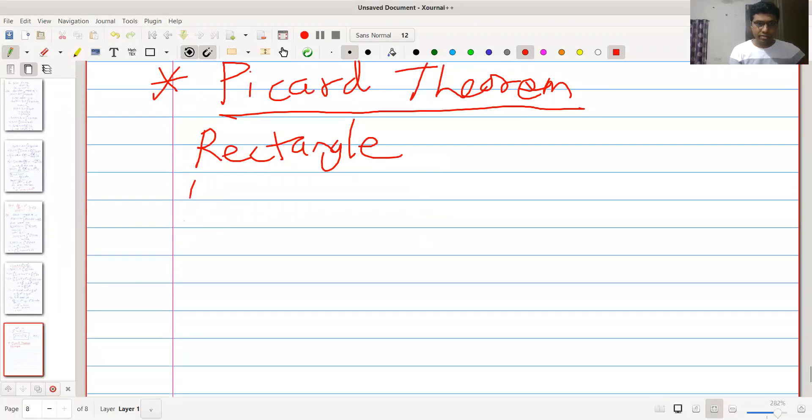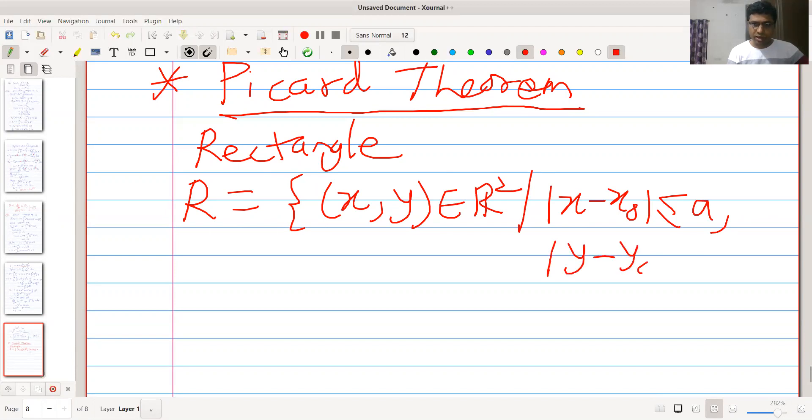It is a set R given by all the points (x,y) in plane satisfying the condition |x - x₀| ≤ a, some positive value a, and |y - y₀| ≤ b, where b is also a positive value.